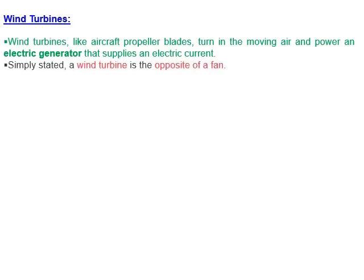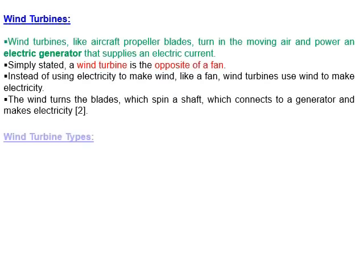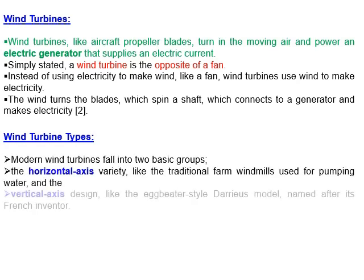Wind turbines come in different sizes and shapes. A simplified way to understand them: they are the opposite of a fan. A fan uses electricity to produce wind; in a wind turbine, the opposite happens — it is rotated by wind itself, converting mechanical energy into electrical energy.